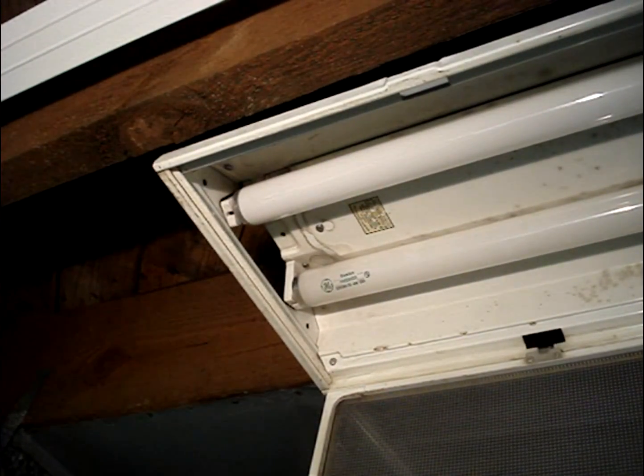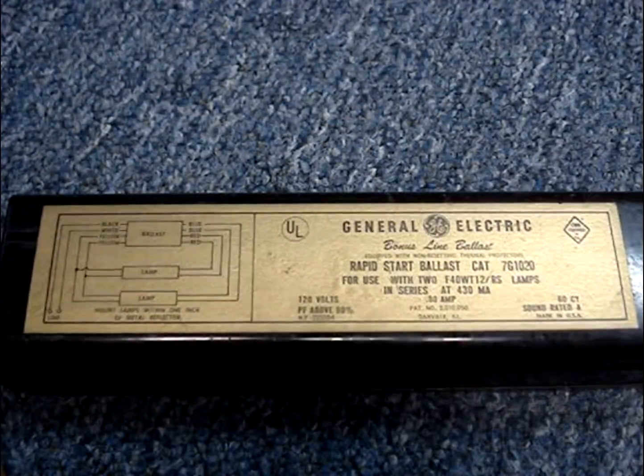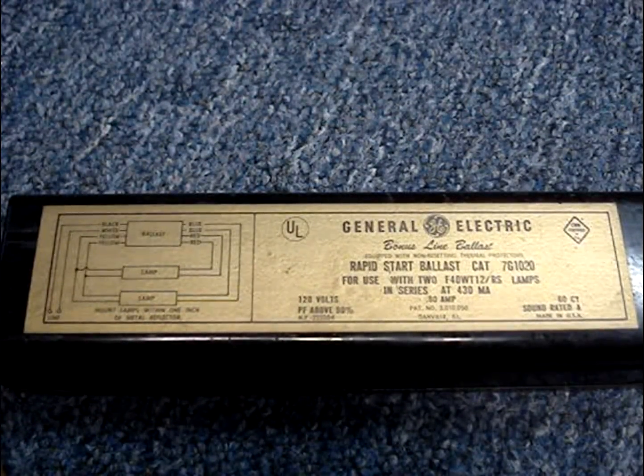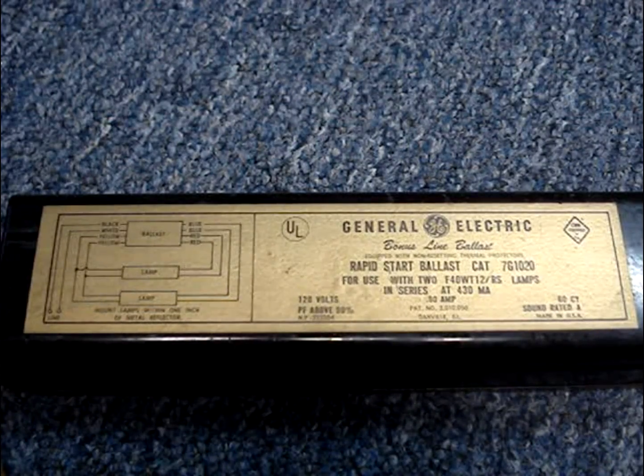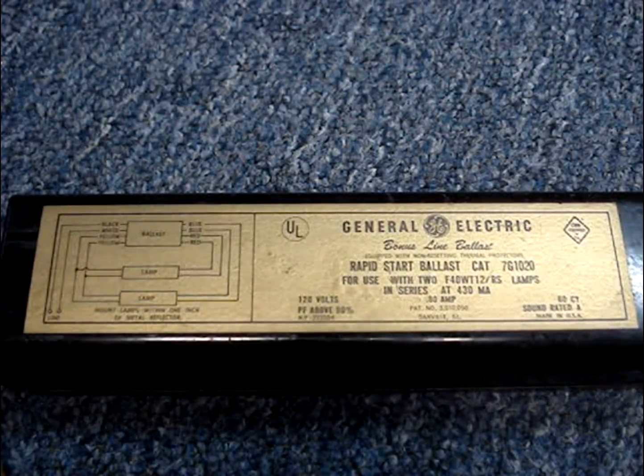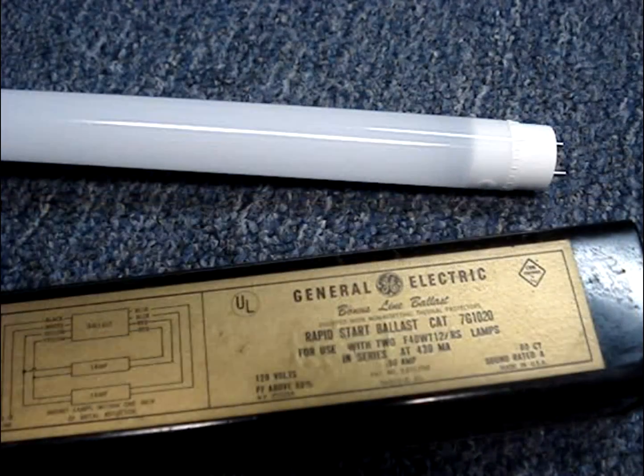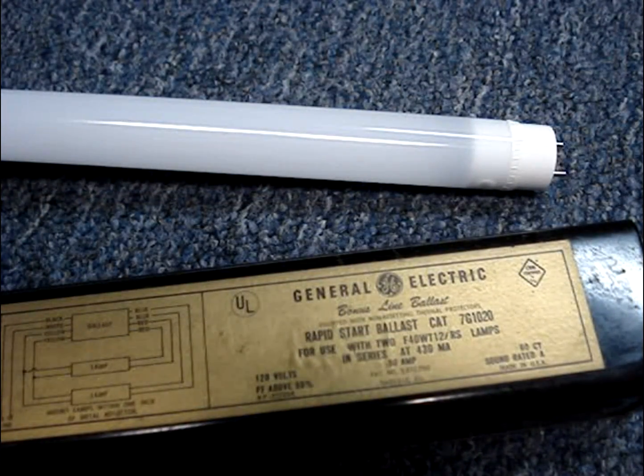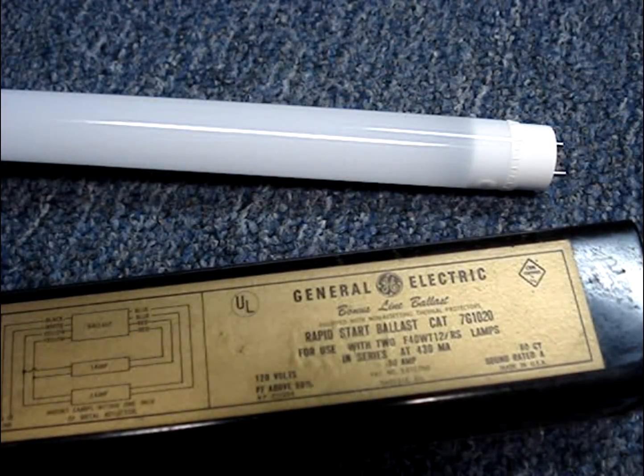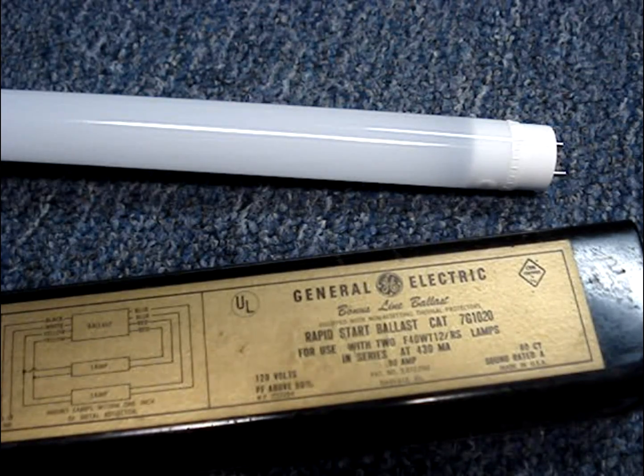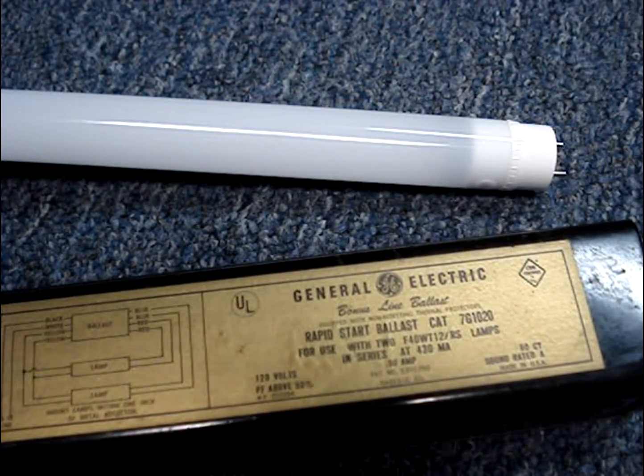There are hybrid tubes. They can be used with the ballast as a plug and play. Then after the ballast fails, you can remove the ballast and wire the tubes directly to 120 volts AC. They may not play nice with your ballast and save much energy and when the ballast fails, you'll still need to rewire the fixture.